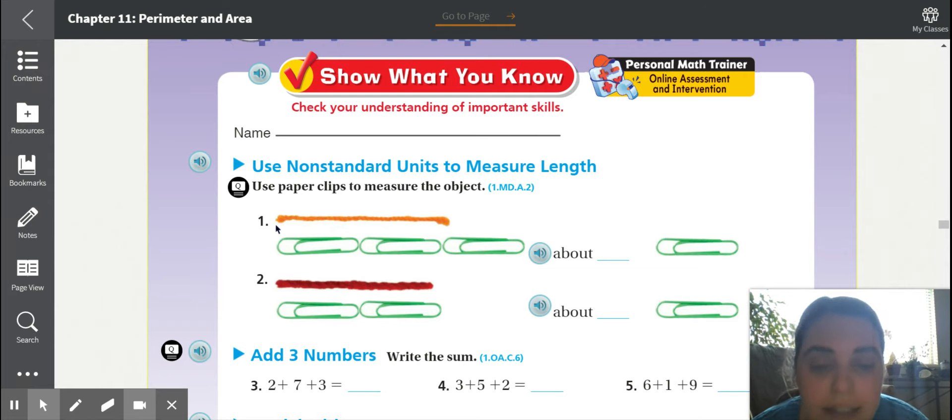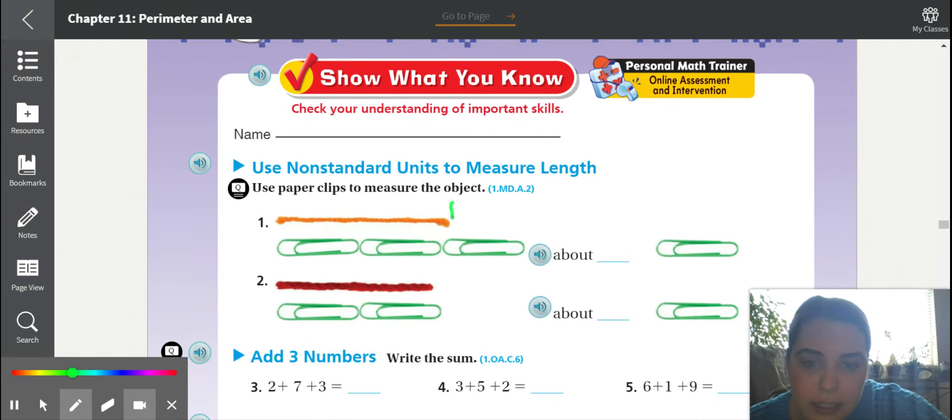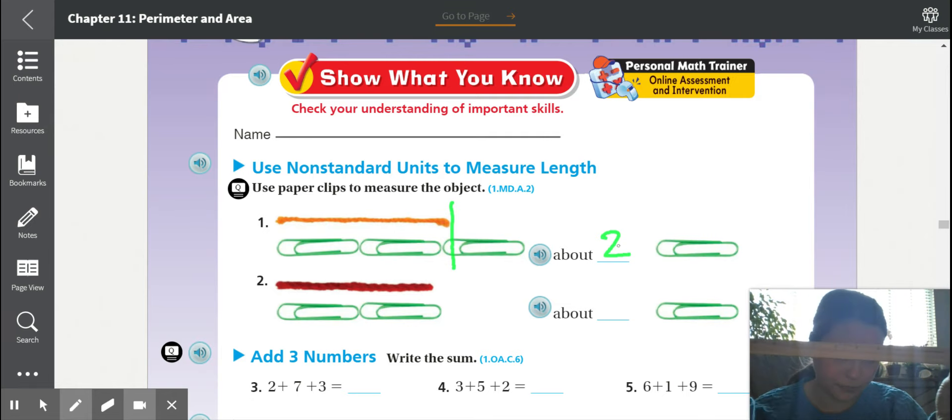Looking at number one, it says about how long is that piece of string? We're going to compare it to the paperclips. If I were to draw a line where the string ends, that is about two paperclips long. Now we usually don't measure things in paperclips. We use things like rulers or maybe yardsticks or meters. That's how we measure how long things are. But today we're going to just use these paperclips.